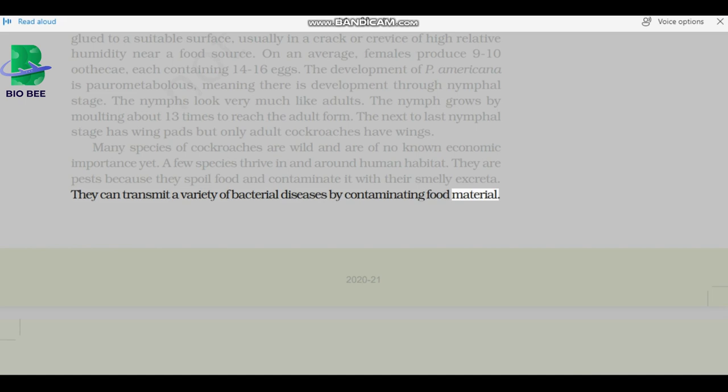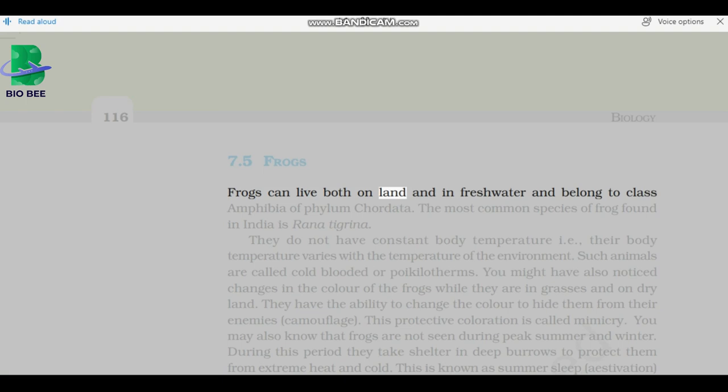Frogs: Frogs can live both on land and in freshwater and belong to class Amphibia of phylum Chordata. The most common species of frog found in India is Rana tigrina. They do not have constant body temperature, i.e. their body temperature varies with the temperature of the environment. Such animals are called cold-blooded or poikilotherms. You might have also noticed changes in the color of the frogs while they are in grasses and on dry land. They have the ability to change the color to hide them from their enemies, camouflage. This protective coloration is called mimicry. You may also know that frogs are not seen during peak summer and winter. During this period they take shelter in deep burrows to protect them from extreme heat and cold. This is known as summer sleep, aestivation, and winter sleep, hibernation, respectively.